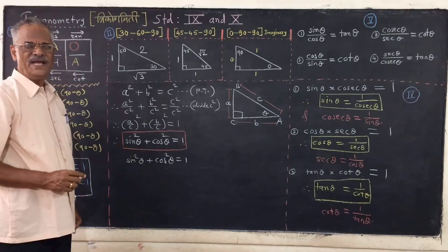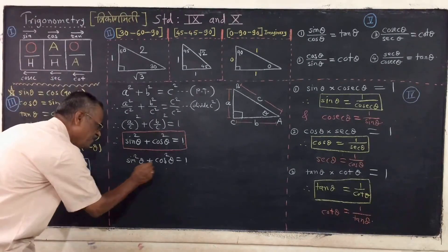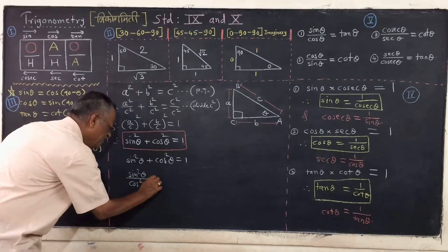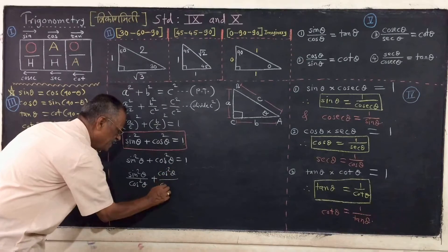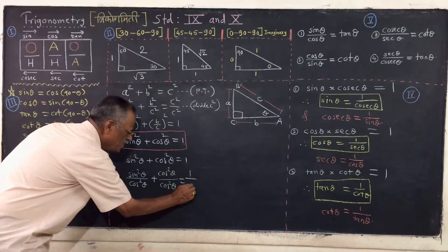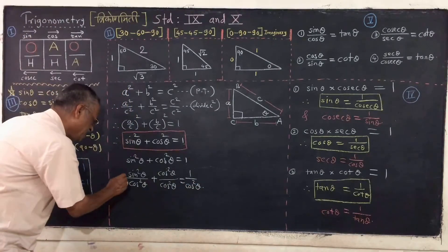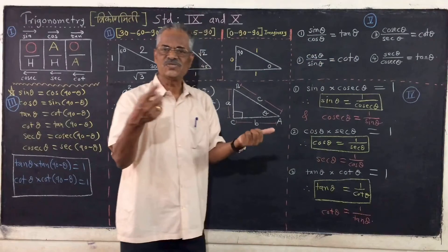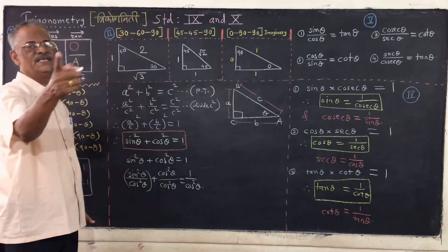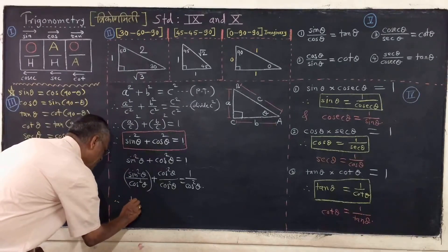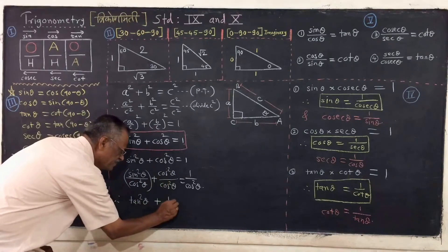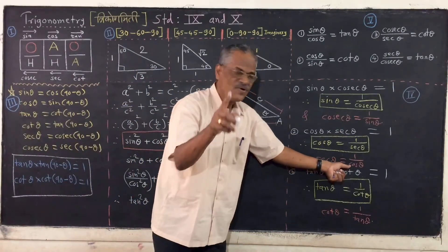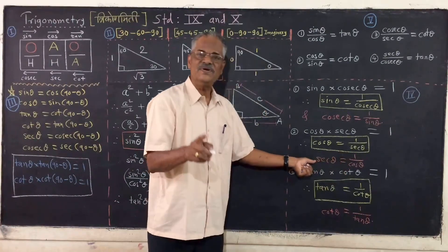This is true. If we divide by cos squared theta: sine squared theta divided by cos squared theta, plus cos squared theta divided by cos squared theta, is equal to 1 upon cos squared theta. Now you can see that sine theta divided by cos theta is tan theta, so sine squared theta upon cos squared theta equals tan squared theta. This is 1, so substituting: tan squared theta plus 1 is equal to 1 upon cos squared theta. Remember that 1 upon cos theta is sec theta, and 1 upon cos squared theta equals sec squared theta.